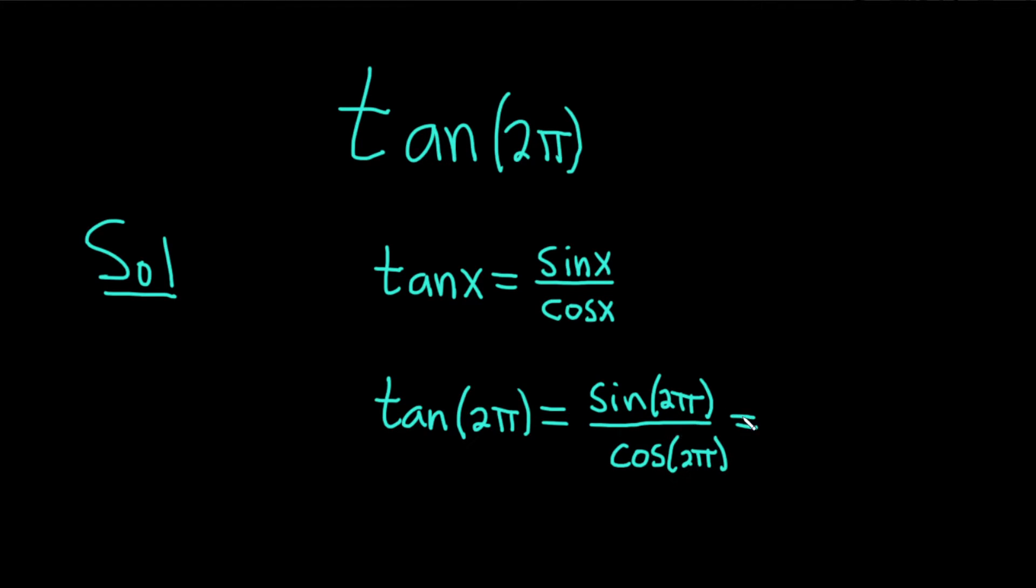The sine of 2π is just 0 and the cosine of 2π is 1. So you get 0 over 1, so you get 0.